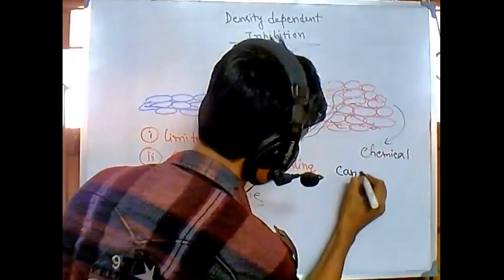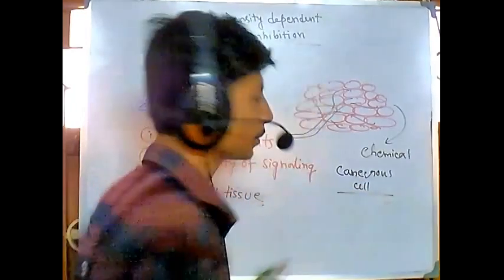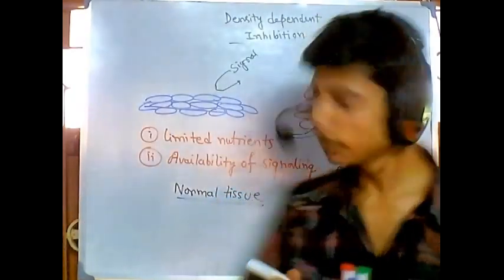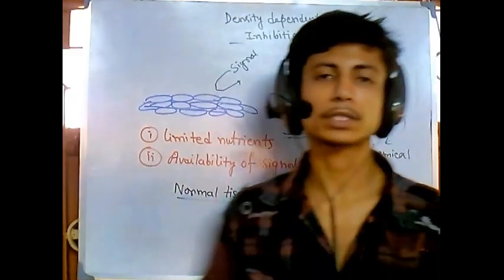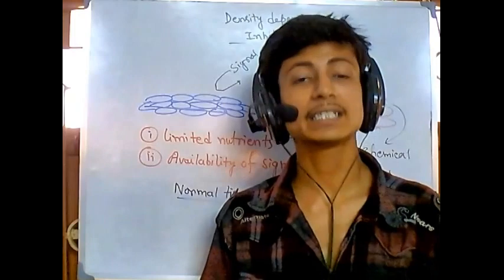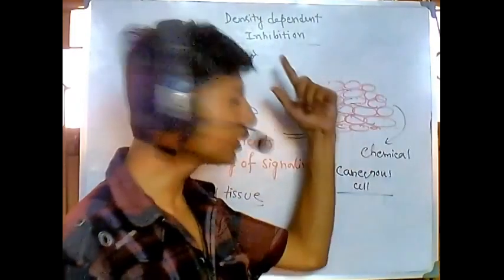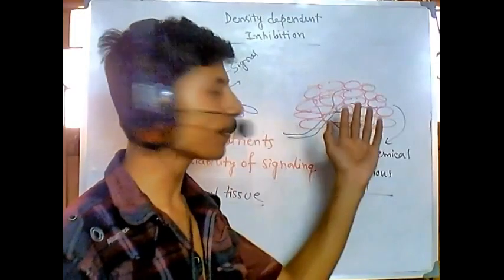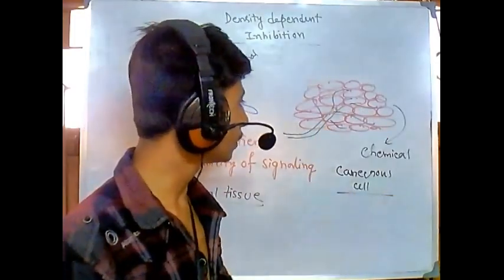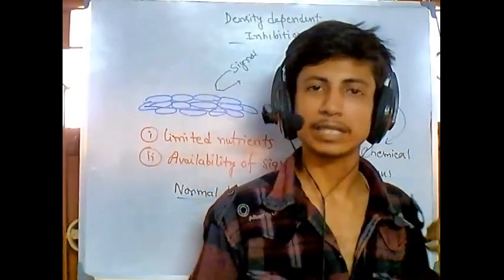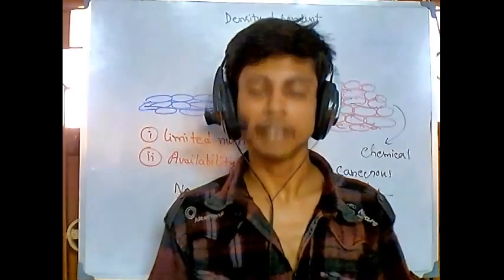Remember, density dependent inhibition is a good and normal process to prevent overgrowth, and it is very important. But for cancer, they don't always obey this rule. They just grow rapidly according to their own demand and they are going against it. So that's it about density dependent inhibition. Thank you.